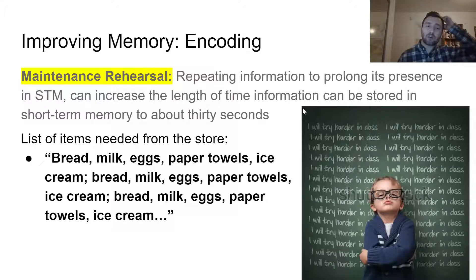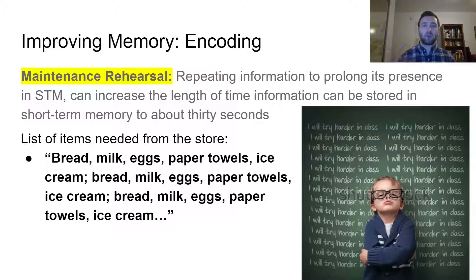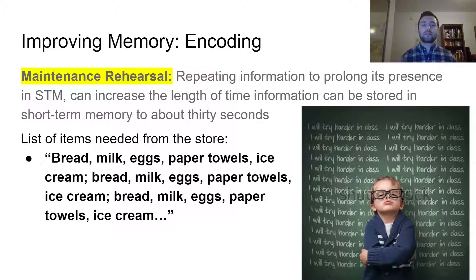In addition, we can use what is called maintenance rehearsal — repeating information over and over again to prolong how long we hold it in short-term memory. Both chunking and maintenance rehearsal have to do with encoding: we're getting information into our brain in a way that's better than just hearing or seeing it once. With maintenance rehearsal we're lengthening how long something can sit in short-term memory, though it really just makes it last about 30 seconds. It's not useful for remembering something for days, but it's good for quick things we need briefly.